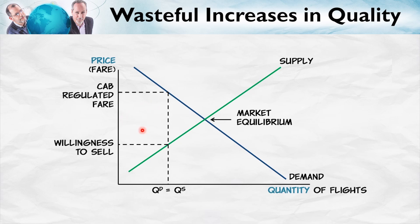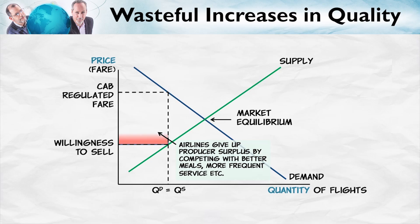But all of this competition in terms of quality was raising the costs to the airlines. In addition, these profits attracted the unions. The unions said they wanted a chunk of this, so wages would start to go up. What happened was that the airlines gave up this profit or producer surplus by competing in terms of better meals, more frequent service, and so forth. What's wrong is that the airlines were producing quality even when the cost of that quality was higher than the value to the customers.